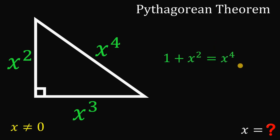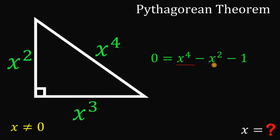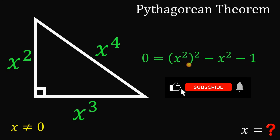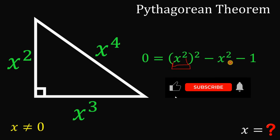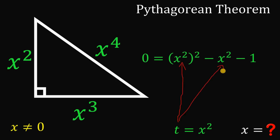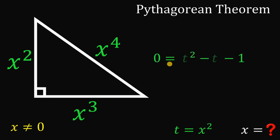Let's rearrange and equate to 0: we have 0 equals x to the fourth power minus x squared minus 1. We can write x to the fourth power as x squared raised to the power of 2. To simplify, let's substitute t for x squared, giving us 0 equals t squared minus t minus 1 — a quadratic equation.